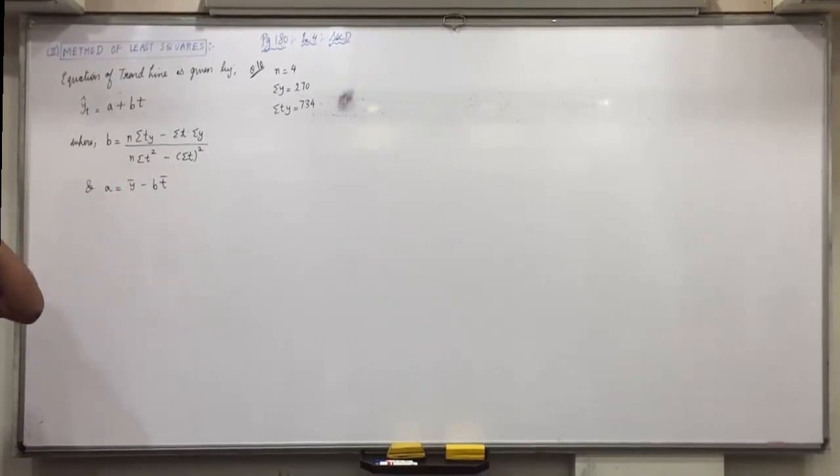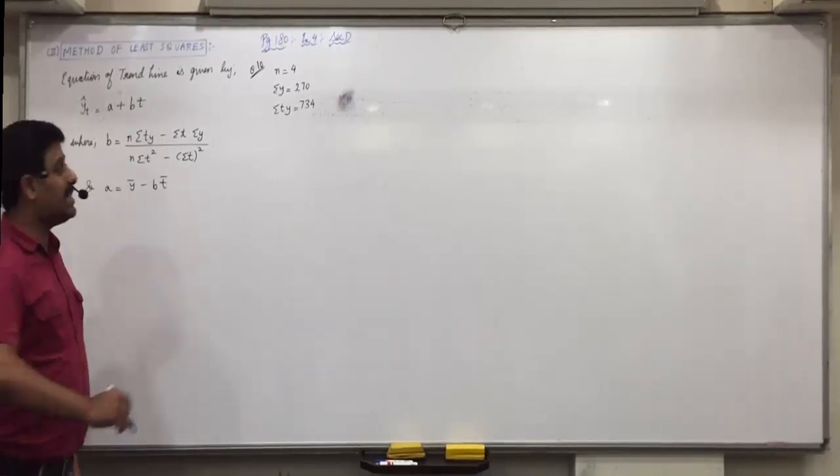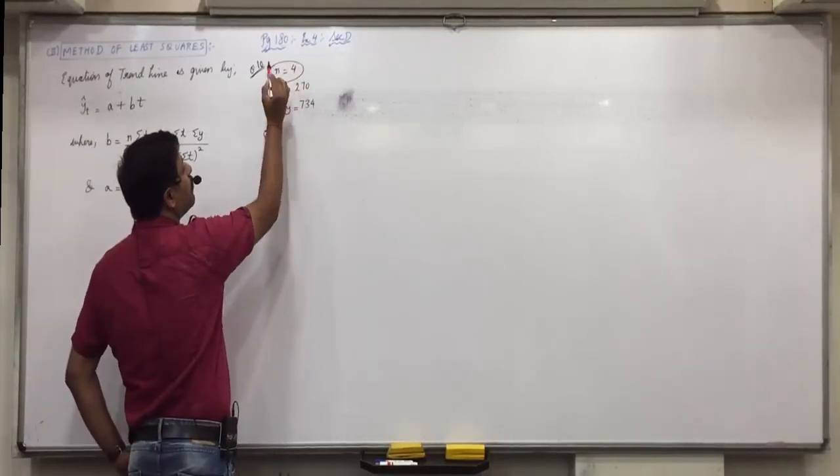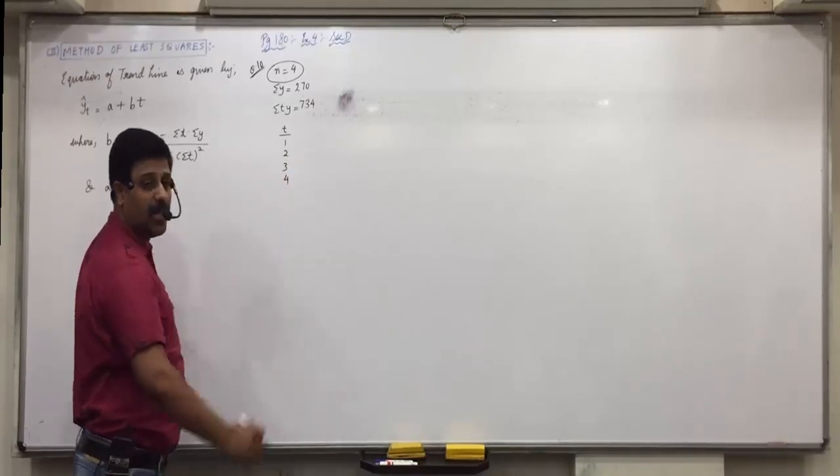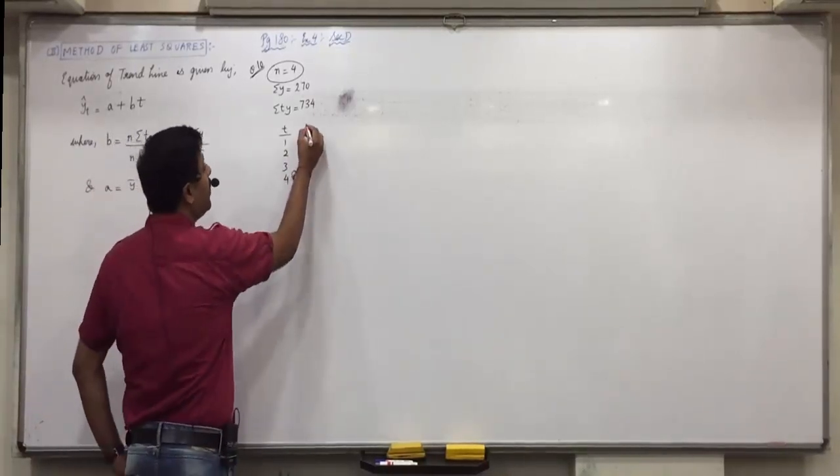So, raise your hand. How will we find that? Sigma t and sigma t squared, how will that be obtained? Anyone else? Sir, 1, 2, 3 and sigma t squared. Correct. What is n? So, t will be 1, 2, 3 and 4 values of t. And we require t and t squared.